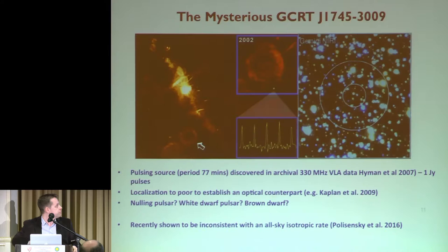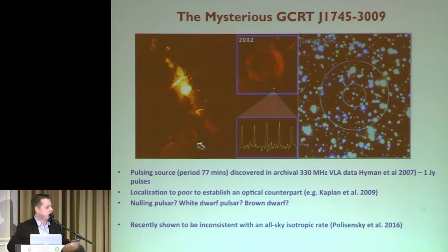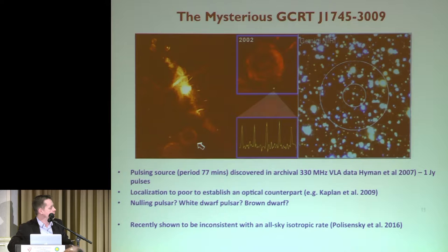I want to talk about two bona fide radio transients found in archival VLA data that motivate this kind of survey. First is the mysterious GCRT J1745-3009 — the galactic-center radio transient — found in archival VLA data at 320 megahertz, covering the galactic-center region. Up popped a pulsing source with a period of about 77 minutes and flux density of about 1 Jansky. It was redetected by the GMRT in India, but localization was too poor to give a robust position, particularly in the dense region near the galactic center. Lots of theories — nulling pulsar, white dwarf pulsar, brown dwarf — were put forward, and it remains a mystery.